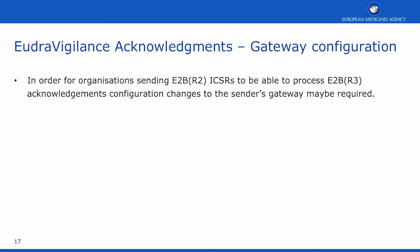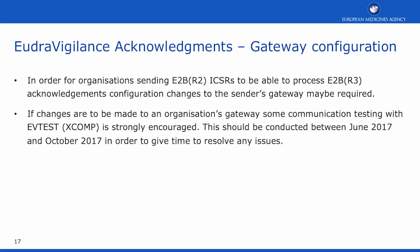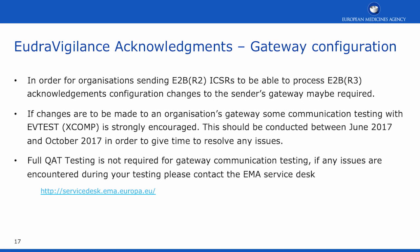In order for organisations sending E2B R2 ICSRs to be able to process the E2B R3 acknowledgement, configuration changes will need to be made to the sender's gateway. If changes are to be made to the organisation's gateway, some communication testing with EVTest, also known as EXCOMP, is strongly encouraged. This should be conducted between June 2017 and October 2017 in order to give time to resolve any issues encountered. Full QAT testing is not required for gateway communication testing. If any issues are encountered during your testing, please contact the EMA Service Desk.